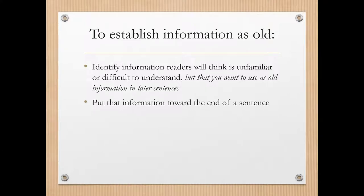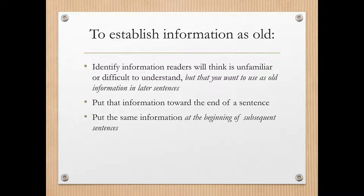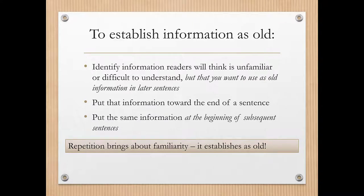We're going to put that new information toward the end of a sentence. And typically, if we want the reader to understand this well, we want to put that same information at the beginning of subsequent sentences. We've come across this in prior videos — the idea that we're going to put repetition throughout a particular paragraph. We talked about perovskites and solar cells in some earlier summary statements, and we looked at how when we put those same objects or subjects many times throughout the paragraph, the reader starts to come to terms with them and they become old information. Repetition brings about familiarity and establishes new information as old information.